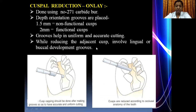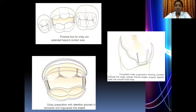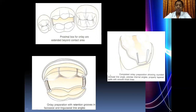Once the occlusal reduction is completed, the onlay cavity preparation continues. For an MOD cavity involving both mesial and distal surfaces, the pulpal floor is prepared and two proximal boxes are prepared — one on the mesial side and one on the distal side, same as for a class 2 inlay preparation. Retentive grooves are placed on both proximal boxes using the 169L tungsten carbide bur on the bucco-axial line angle and the linguo-axial line angle.